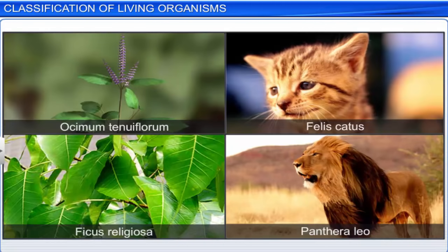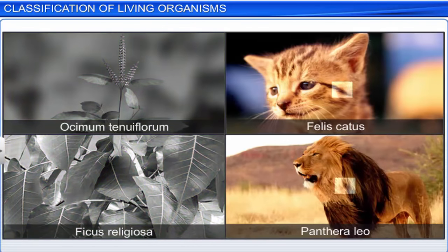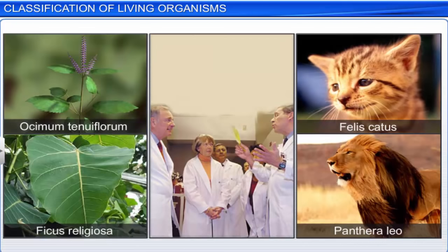To make the process of identification easier, scientists have assigned a scientific or biological name to every known organism. The scientific names for plants are based on the principles and criteria given in the International Code for Botanical Nomenclature, or ICBN, and for animals, in the International Code for Zoological Nomenclature, or ICZN. The procedures to assign a scientific name to an organism have been agreed upon by scientists and biologists all over the world.